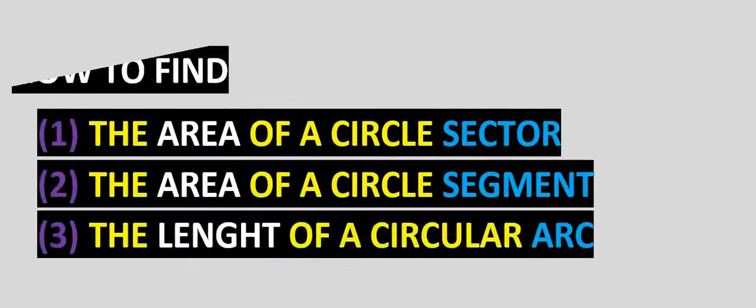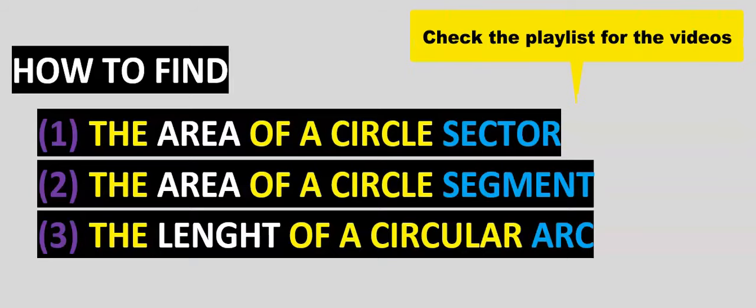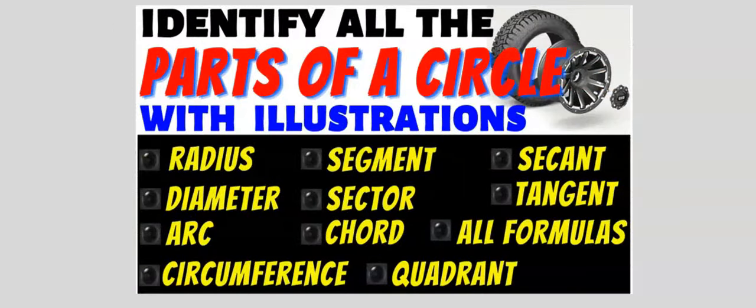The circumference of a circle can also be known as the perimeter of a circle. In another video you will learn how to find the area of a sector, the area of a segment, and the length of an arc. You can also check out the video on parts of a circle.